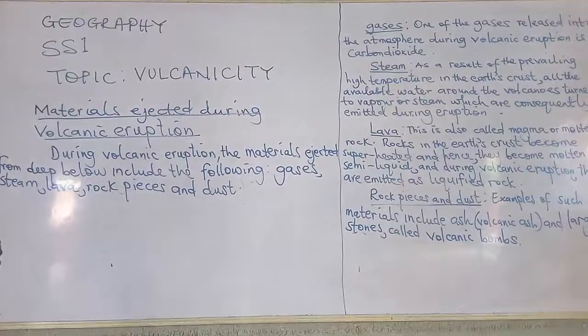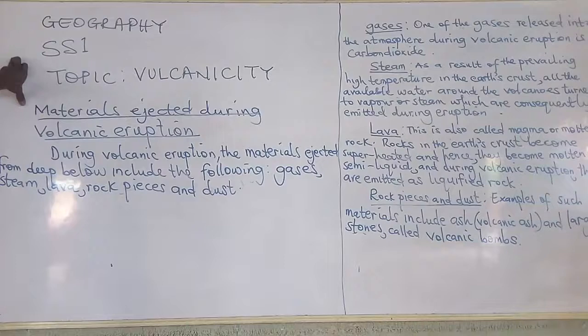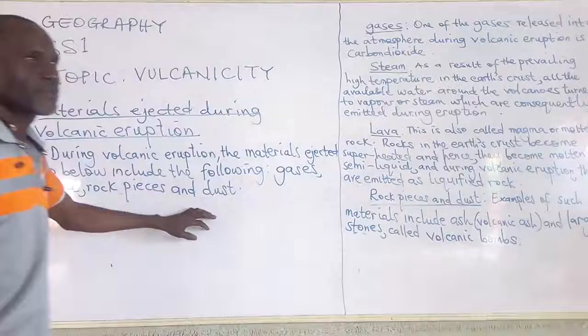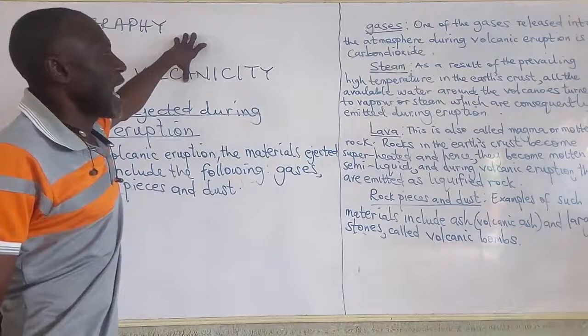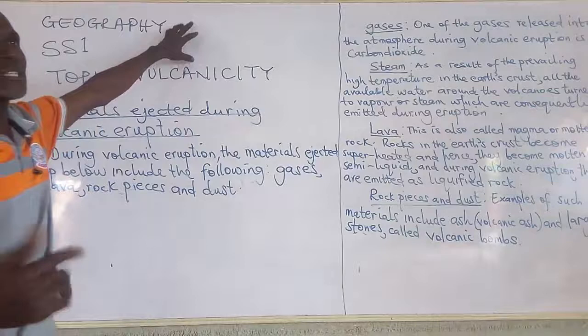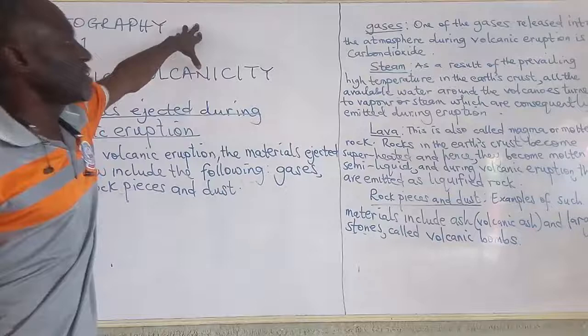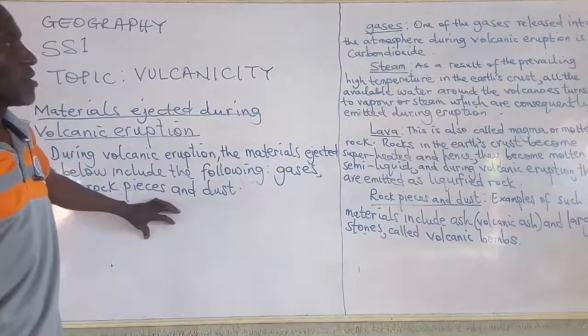Another material released into the atmosphere during volcanic eruption is steam. What brings about steam in the interior of the earth? As mentioned in our last lesson, the temperature in the interior of the earth is quite high. The implication is that all the available water around that volcanic rock will turn to either vapor or steam.